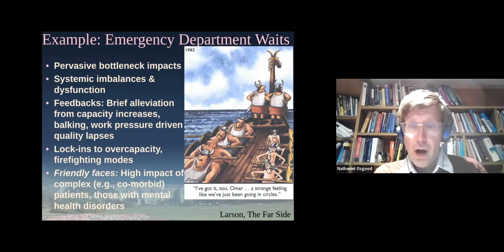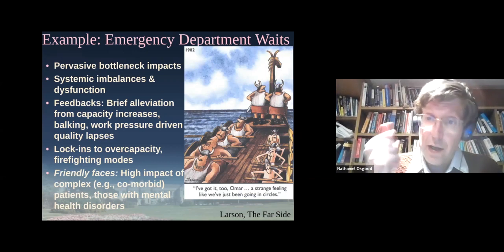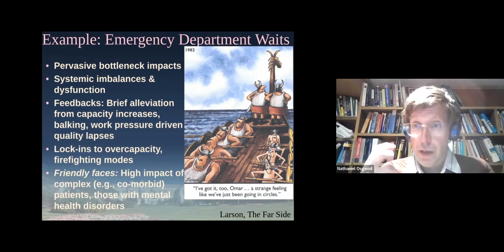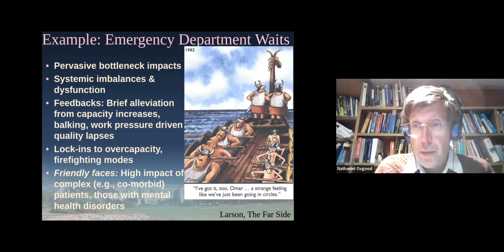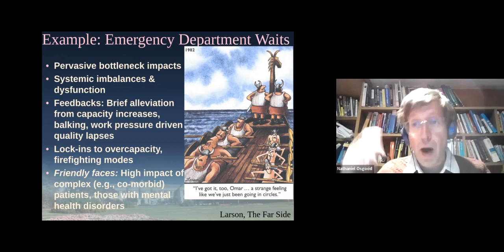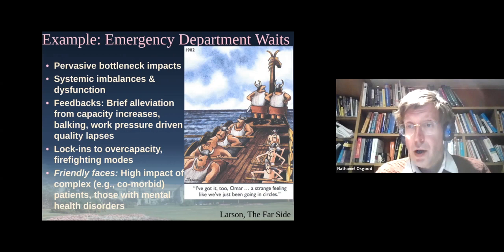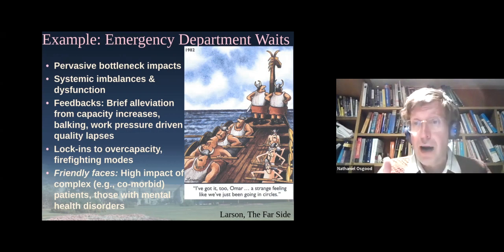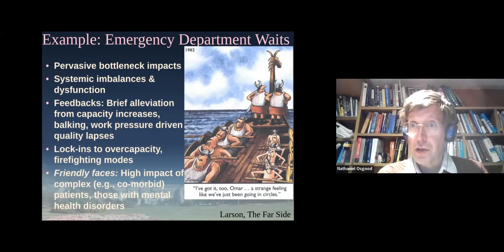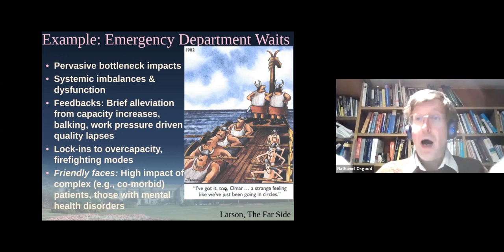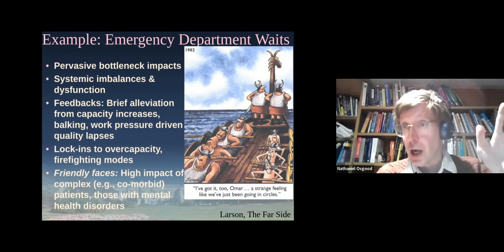Problems like this are legion. When working in health and healthcare, the really gnarly problems — the ones that call for all hands on deck — tend to be complex problems. Emergency department waits, which may seem like a familiar but modest issue, is actually a symptom of a system-wide set of imbalances between acute care and the availability of services in the community. Sometimes the problem is not that we don't have enough resources, but that they are divided in ways that are totally imbalanced.